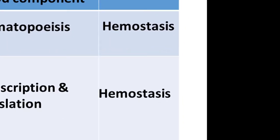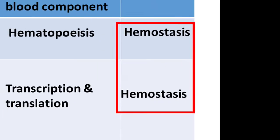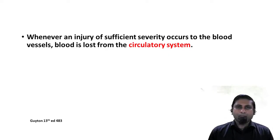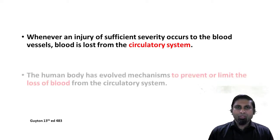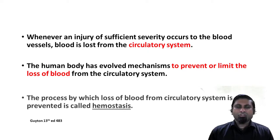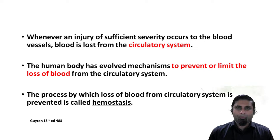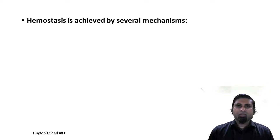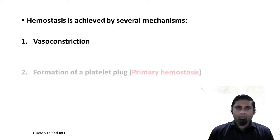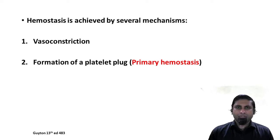Let us turn our attention more closely to the process of hemostasis. Whenever an injury of sufficient severity occurs to the blood vessels, blood is lost from the circulatory system, and the human body has evolved elaborate mechanisms to prevent or limit this loss. This mechanism is what we refer to as hemostasis, which is achieved by several mechanisms, the simplest of which is vasoconstriction. Platelets get activated and form a platelet plug, limiting blood loss — this is referred to as primary hemostasis.